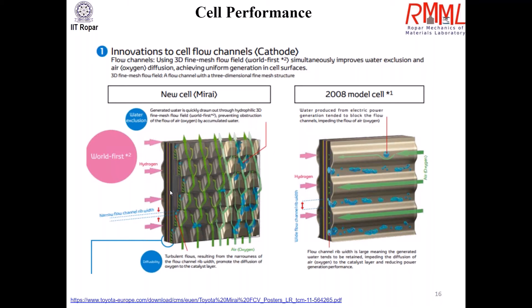At the cathode catalyst layer — which is platinum-based — the H+ ions react with oxygen to generate water. Water produced from the electric power generation tends to block the flow channels. Simulations can help us understand how to design better channels to control water removal quickly. In the 2021 electrode innovation, the electrolyte membrane was made thinner and the gas diffusion layer uses low-density, thinner base material. The membrane electrode assembly — MEA — is the most important part of the fuel cell stack because this is where all the reactions happen.